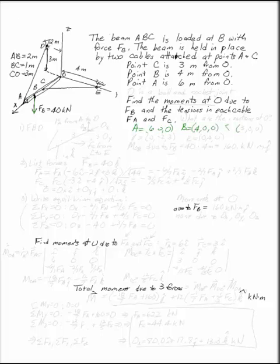C is at 3,0,0. D is at 0, -2, and 3. And E is at 0, 4, and 0.